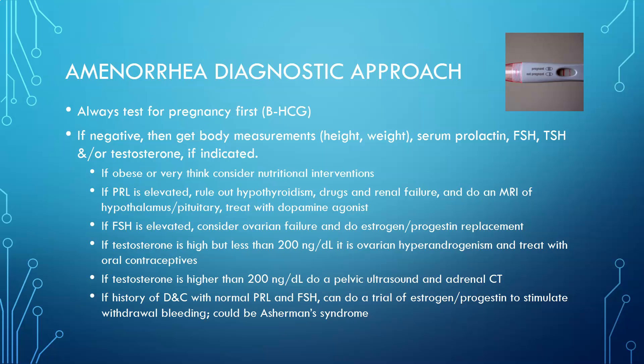If FSH is elevated, consider ovarian failure and possibly estrogen-progesterone replacement therapy. If testosterone is high but less than 200 nanograms per deciliter, this indicates ovarian hyperandrogenism and should be treated with oral contraceptives. If testosterone is greater than 200 nanograms per deciliter, perform a pelvic ultrasound and adrenal CT to look for tumors secreting testosterone. If there is a history of D&C with normal prolactin and FSH, consider a trial of estrogen or progesterone to stimulate withdrawal bleeding.